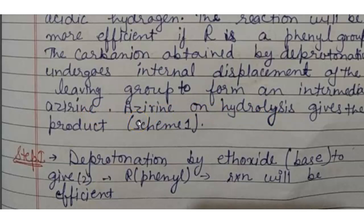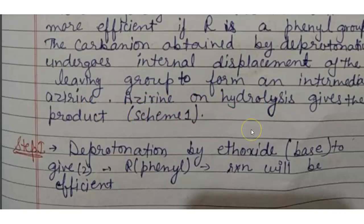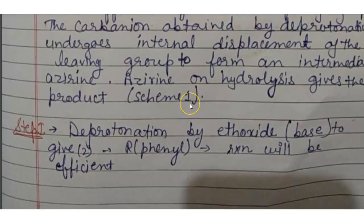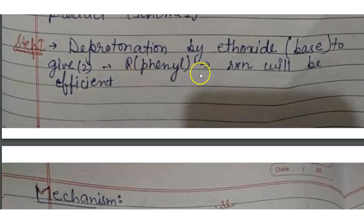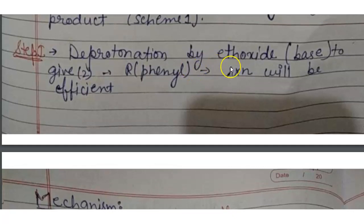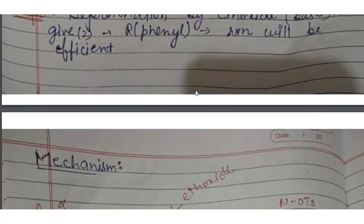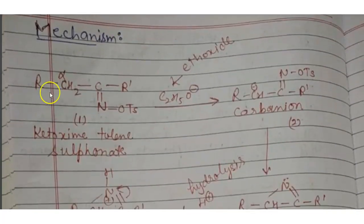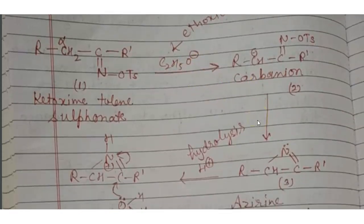Aziridine, aziridine on hydrolysis gives the product. In step 1, deprotonation by ethoxide base. Ethoxide is a base to give the reaction will be efficient. Now here is the mechanism. Ketoxime toluenesulfonate, here is alpha keto and this is ethoxide that is base and forms carbanion.